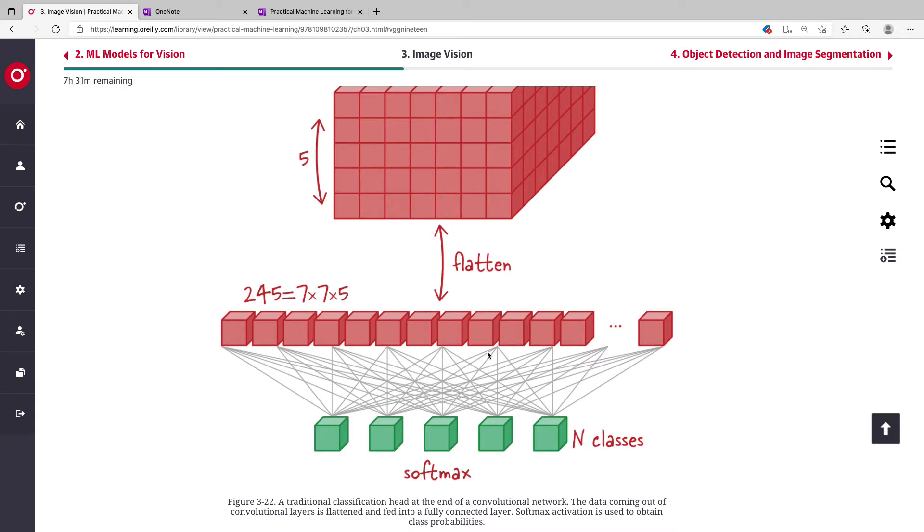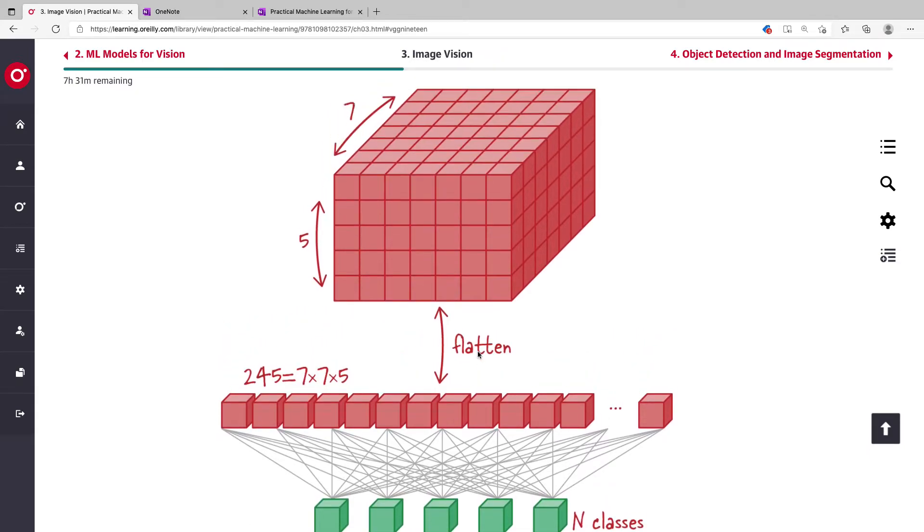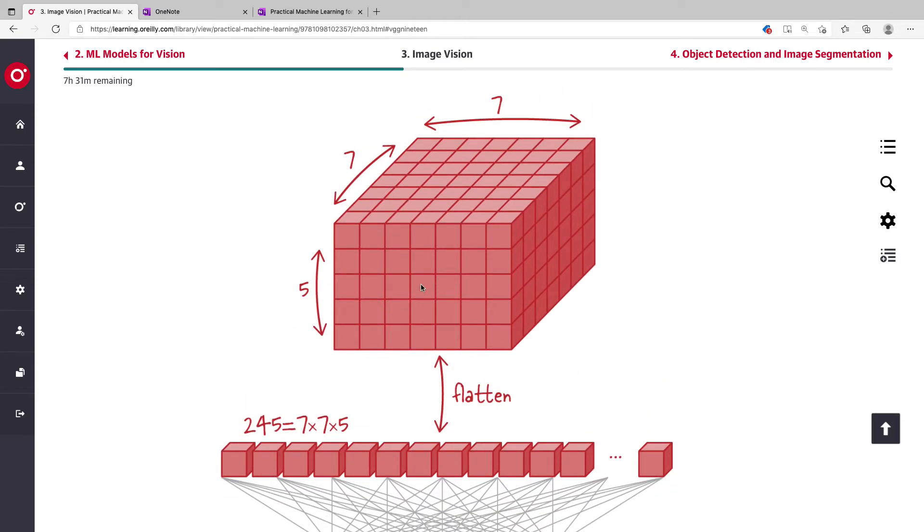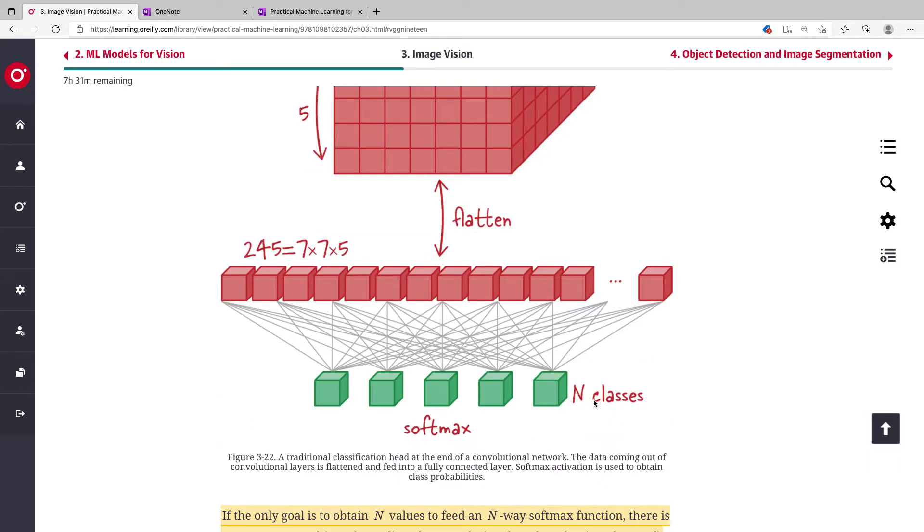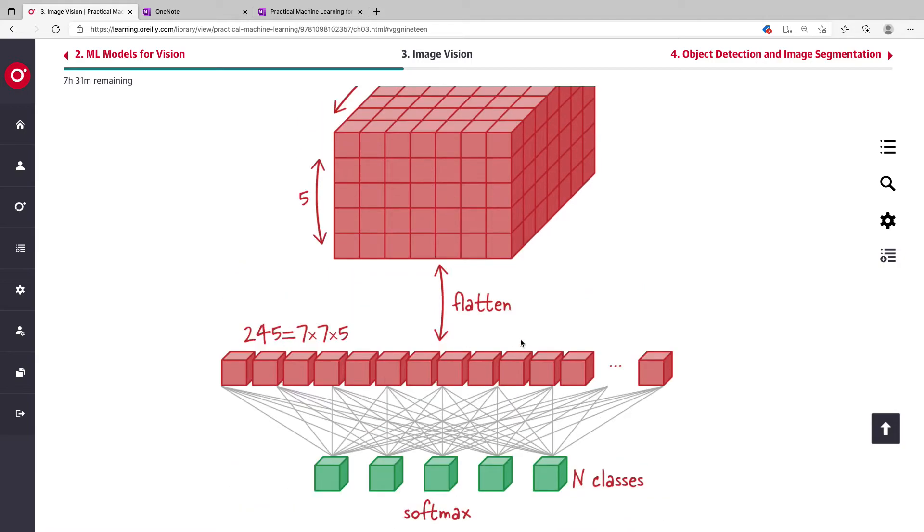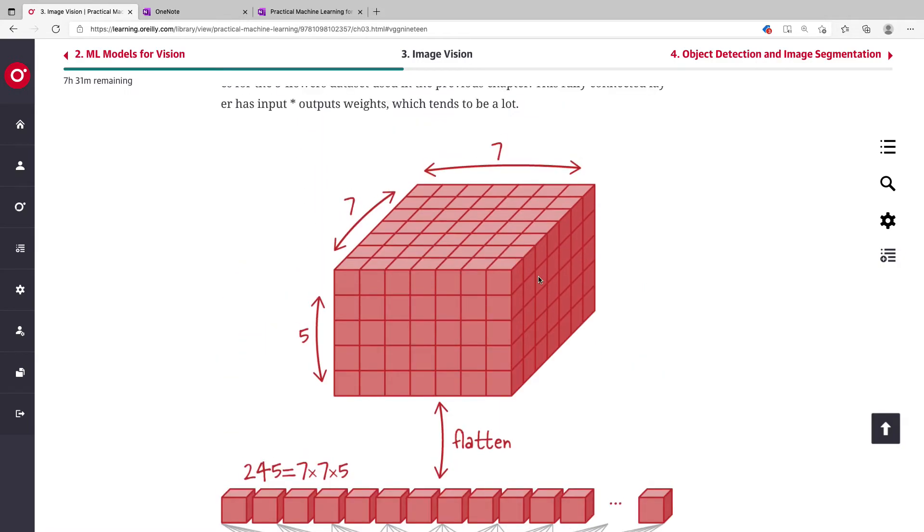If the intention is just to ensure that your feature map eventually feeds into the softmax to learn the probability distribution for each of the classes, then you don't need to flatten. You can just use global average pooling, ensuring that the last convolution layer in your network has the same number of channels as your classes.